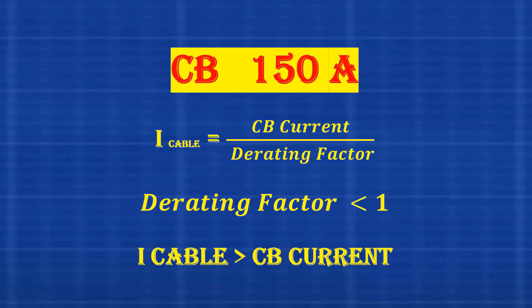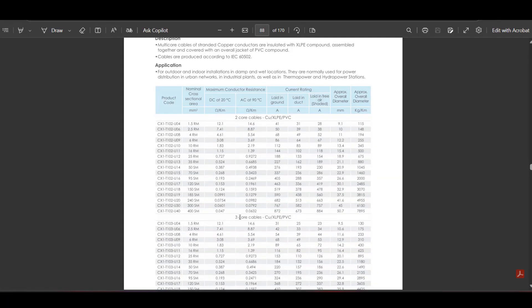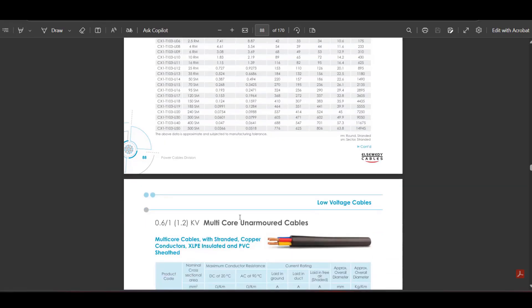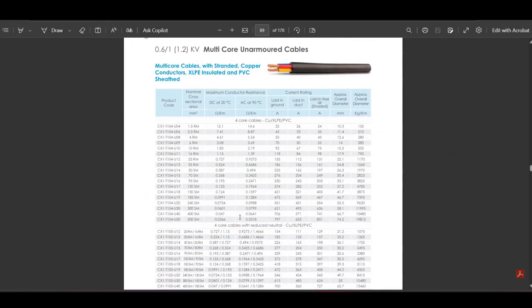Now, let's open the catalog. We find the page for multi-core copper cables with XLPE over PVC insulation. We are selecting a 4-core cable. If we only consider the breaker current of 150 amperes, the table shows a 25 square millimeter cable is enough. But we cannot select the cable only based on the breaker.